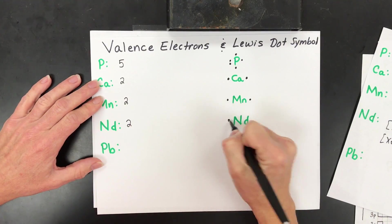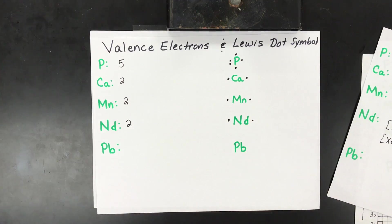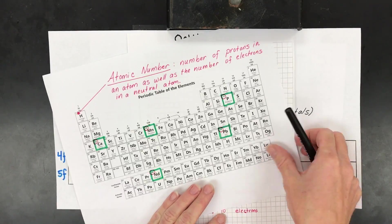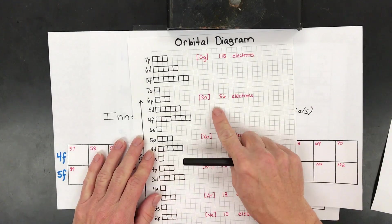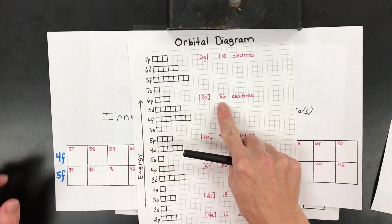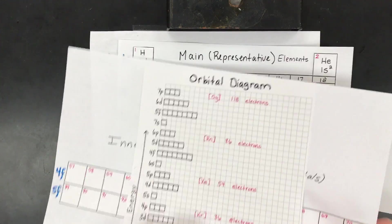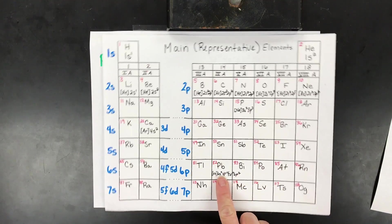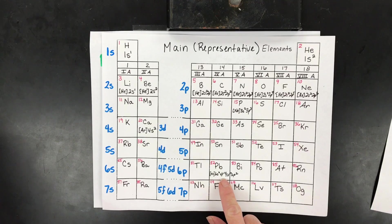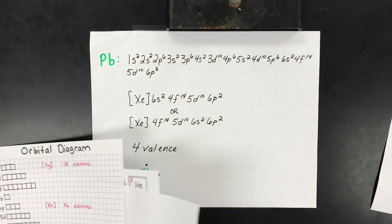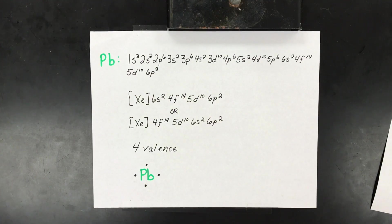Neodymium still has only two valence electrons. For lead (82 electrons): it passes xenon but doesn't quite reach radon, ending with a 6p² on the periodic table. The full and shortened configurations are given, it has four valence electrons, and the Lewis dot diagram reflects that with four dots.